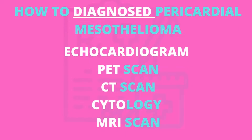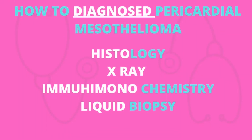One can ask: how is pericardial mesothelioma diagnosed? Malignant pericardial mesothelioma can be diagnosed with a combination of methods including echocardiogram, PET scan, CT scan, cytology, MRI, CT-guided liquid biopsy, histology, x-ray, and immunohistochemistry.